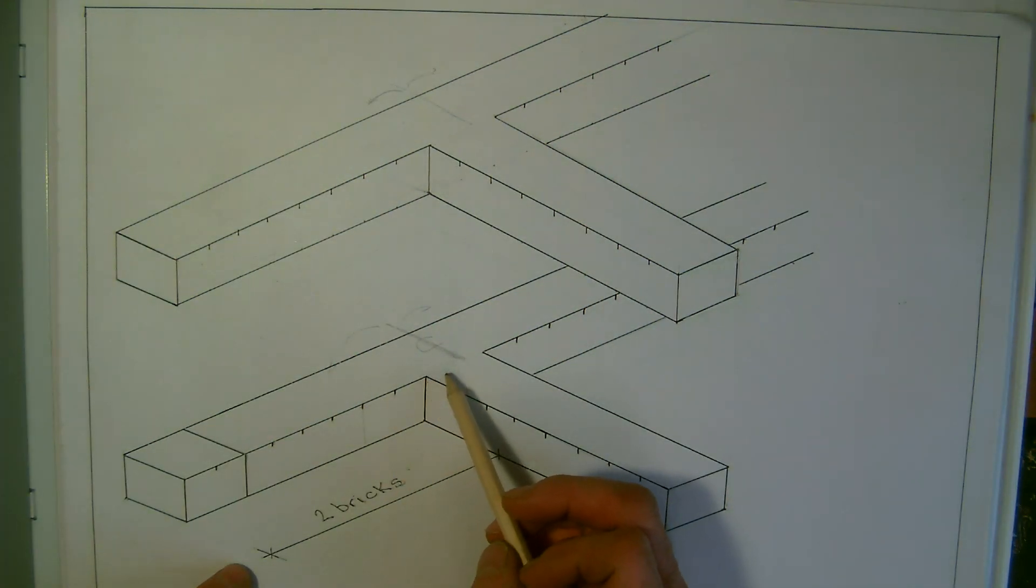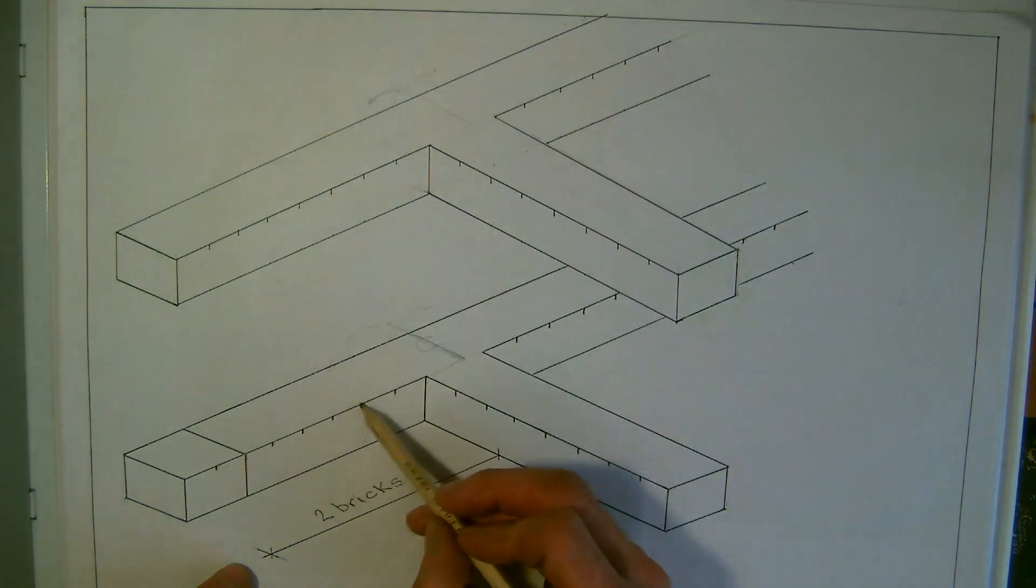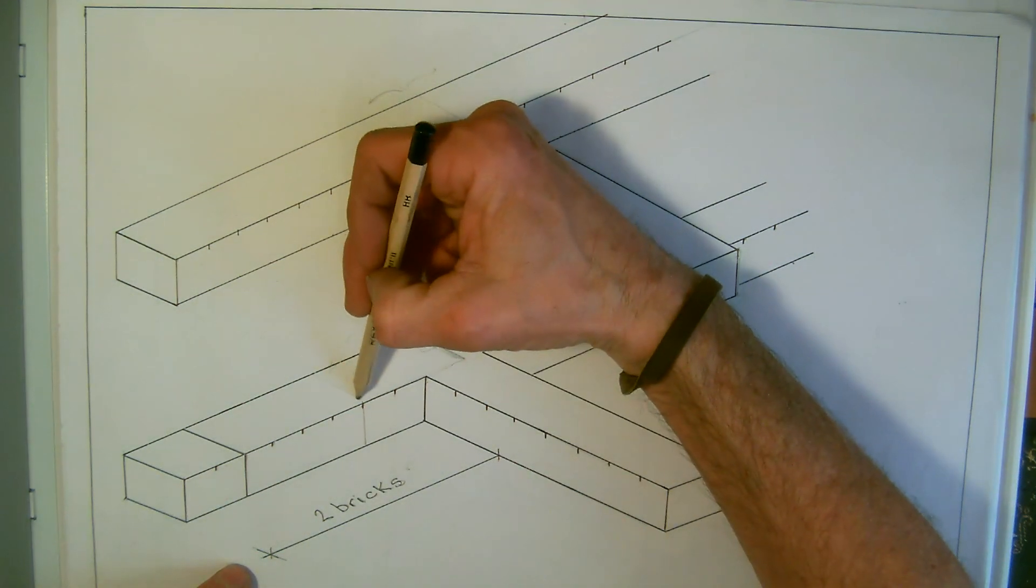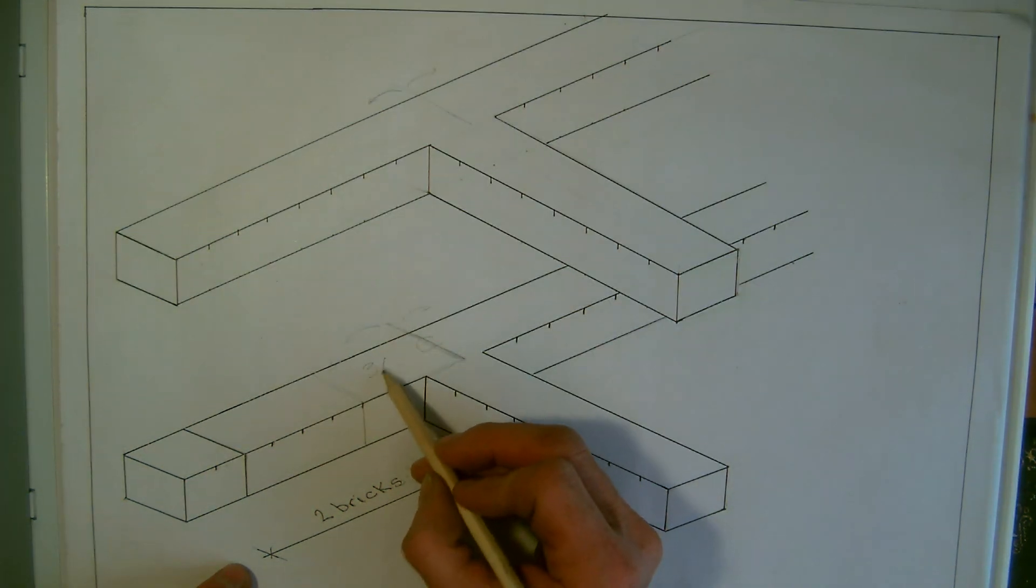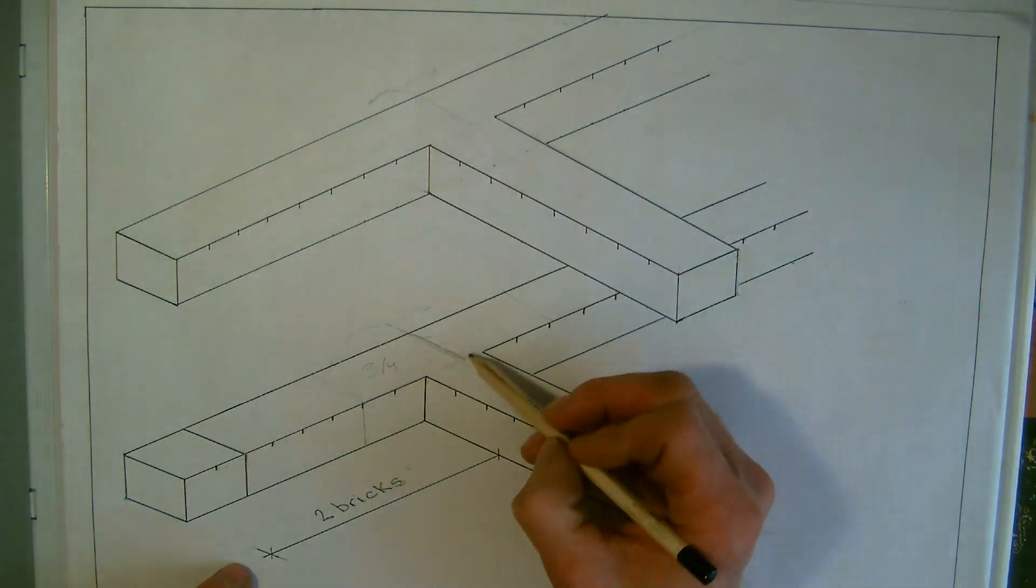So this tells us that really we can't put a half in there because that wouldn't look right. And so what we're going for here is a three-quarter to take us up to there. So there's our stretcher. We can just pencil that in very, very lightly. So if we have a three-quarter in here, we know where the rules of bonding, we must have a three-quarter this side as well.